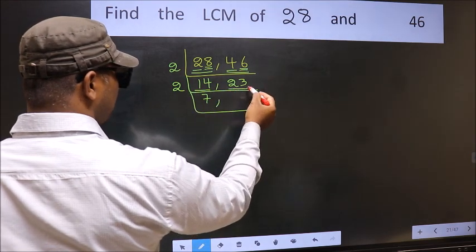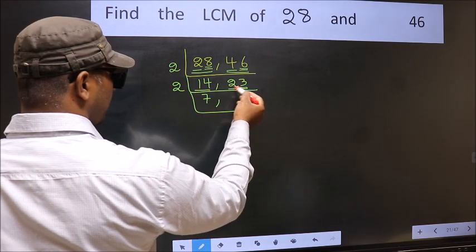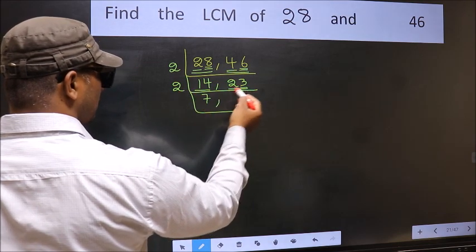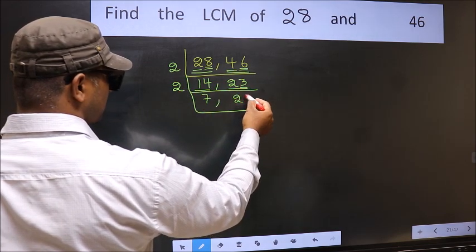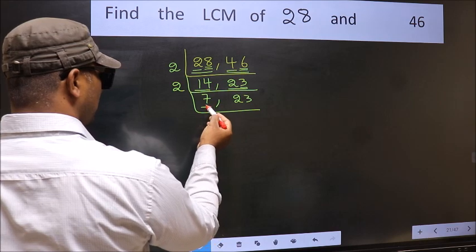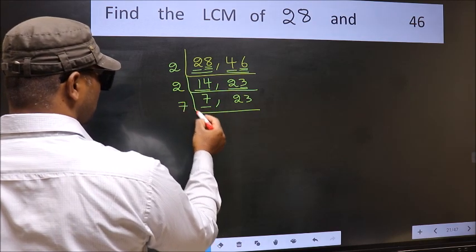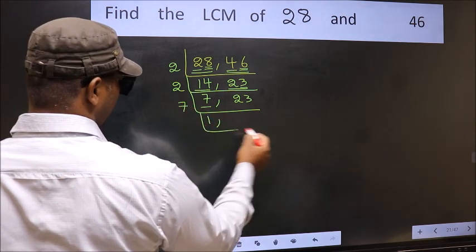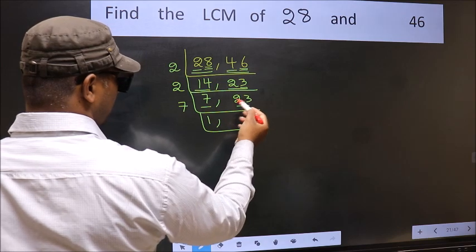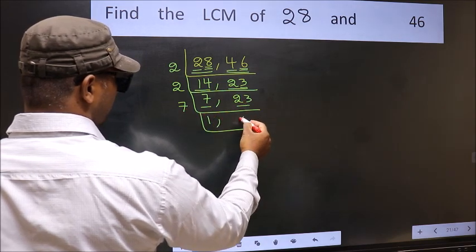The other number 23. Last digit 3. Not even. So this is not divisible by 2. So we write it down as it is. Now here we have 7. 7 is a prime number. So 7, 1's 7. The other number 23. Not divisible by 7. So we write it down.